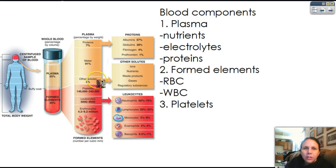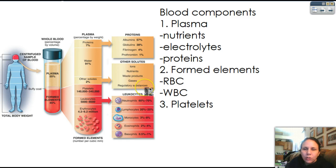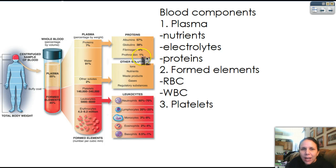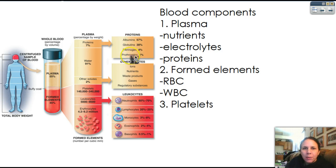91% of the plasma is just plain water. And then 2% is solutes. Solutes include ions, nutrients, waste products, gases, and regulatory substances. The proteins up here include albumins, globulins, fibrinogen, and prothrombin. So we're going to talk about what each one of these do in a couple slides.